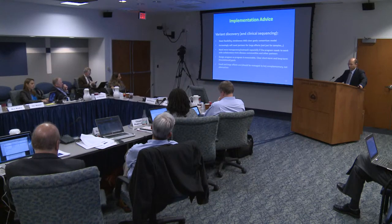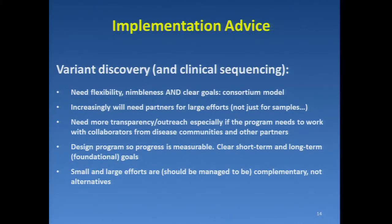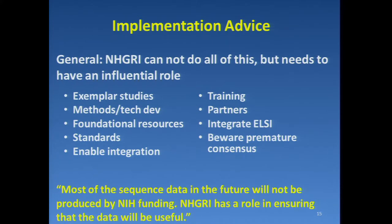The discussion turned to implementation advice for variant discovery and clinical sequencing. We would need flexibility, nimbleness, and clear goals. Increasingly we'll need partners for large efforts — not just partners for providing samples, but more direct partnering. We'll need more transparency and outreach, especially working with collaborators across disease communities. We need to design any program so progress is measurable with clear short-term and long-term goals. And small and large efforts should be managed to be complementary — they're different things and both have their place.